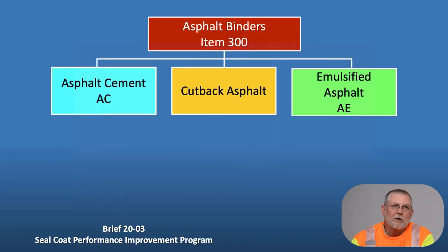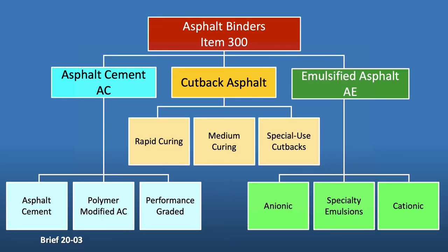Three of the binders we're going to be talking about are asphalt cements, cutback asphalts, and emulsified asphalts. Expanded a little more: asphalt cements include non-polymer modified ACs, polymer modified, and performance graded. Cutback asphalts include rapid curing, medium curing, and special use cutbacks. When we get to emulsified asphalts, we will talk about anionic, specialty emulsions, and cationic.